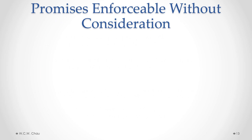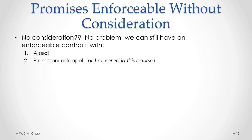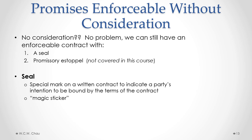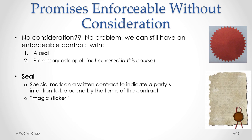A one-sided promise — where one party makes a promise and the other gives nothing in exchange — lacks an exchange of consideration and is not an enforceable contract. Those one-sided promises can be made into enforceable contracts in two ways even without an exchange of consideration. The first way is by using a seal, and the second way is under the legal doctrine of promissory estoppel, which is not covered in this course. A seal is a special mark on a written contract to indicate a party's intention to be bound by the terms of the contract. In practice, this means putting that one-sided promise in writing, signing it, and adding a special red sticker — a magic sticker — whose effect is to make that one-sided promise into a legally binding contract.